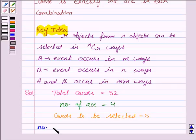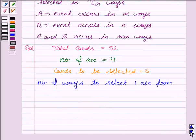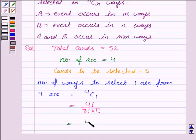The number of ways to select one ace from four aces is equal to 4C1, that is 4 factorial upon 3 factorial into 1 factorial, which is equal to 4.